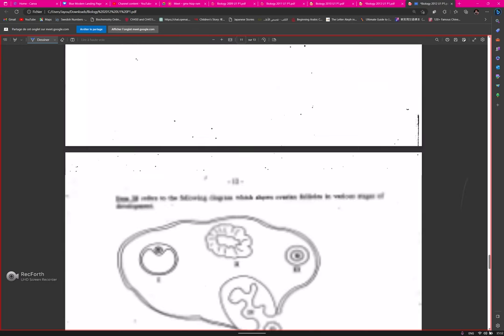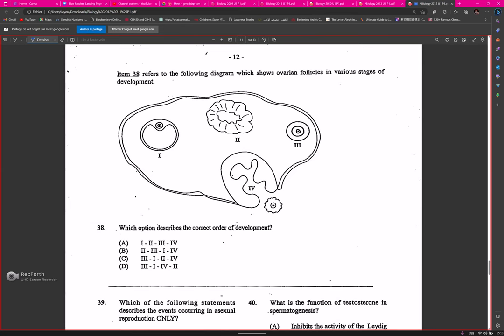Which option describes the correct order of development? It would be three, then one, then four, then two. Three would be the primary follicle with its primary oocyte. Then we have a secondary oocyte in the Graafian follicle. Then it releases the secondary oocyte without its polar body. Then we have the ruptured Graafian follicle becoming the corpus luteum.